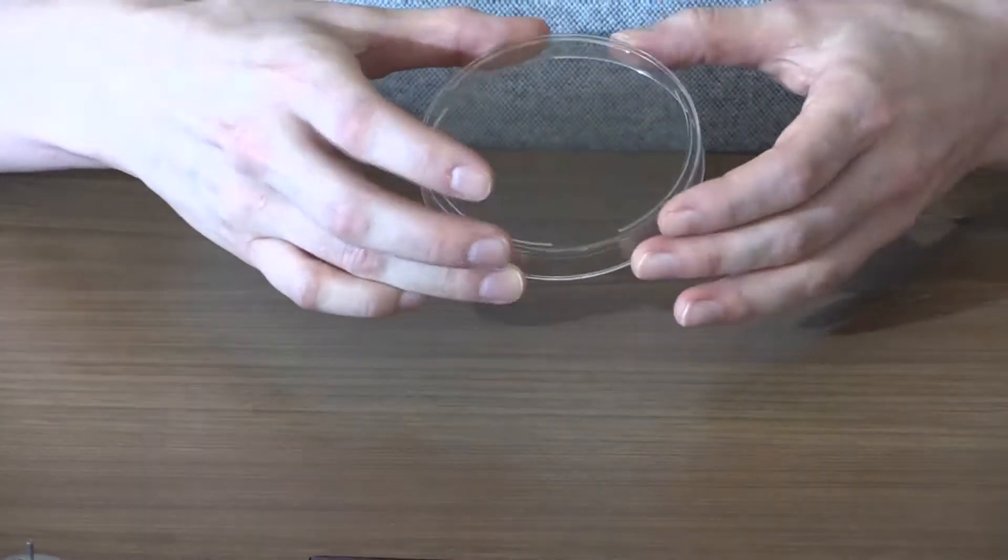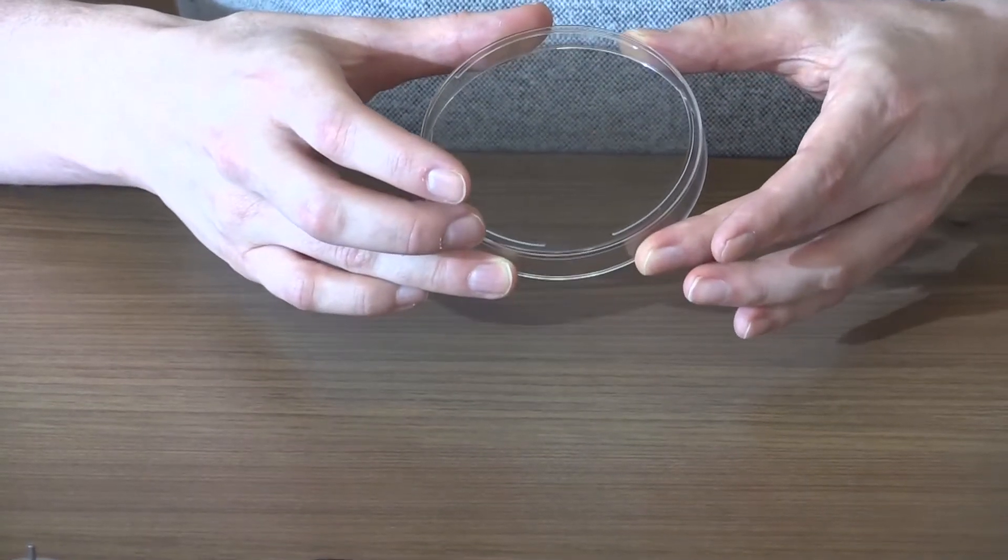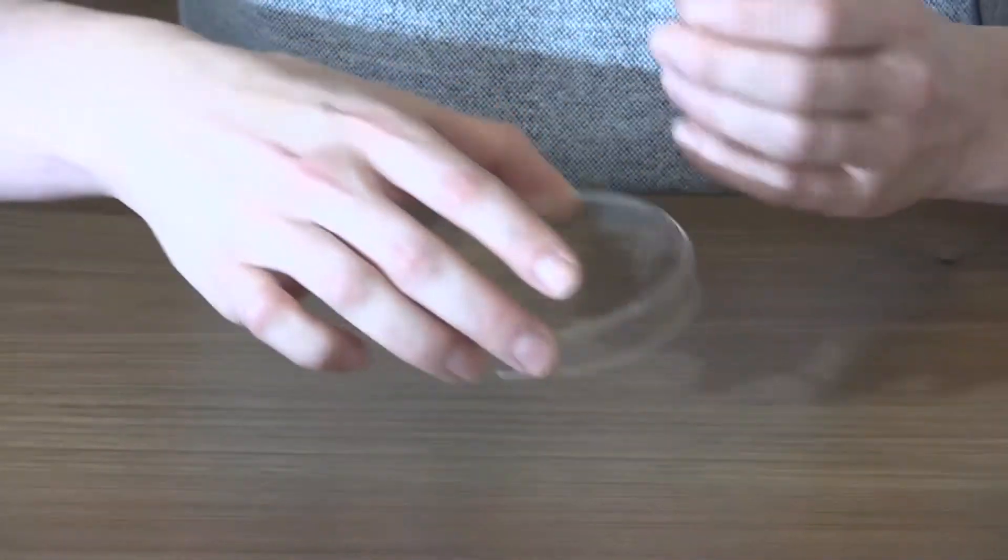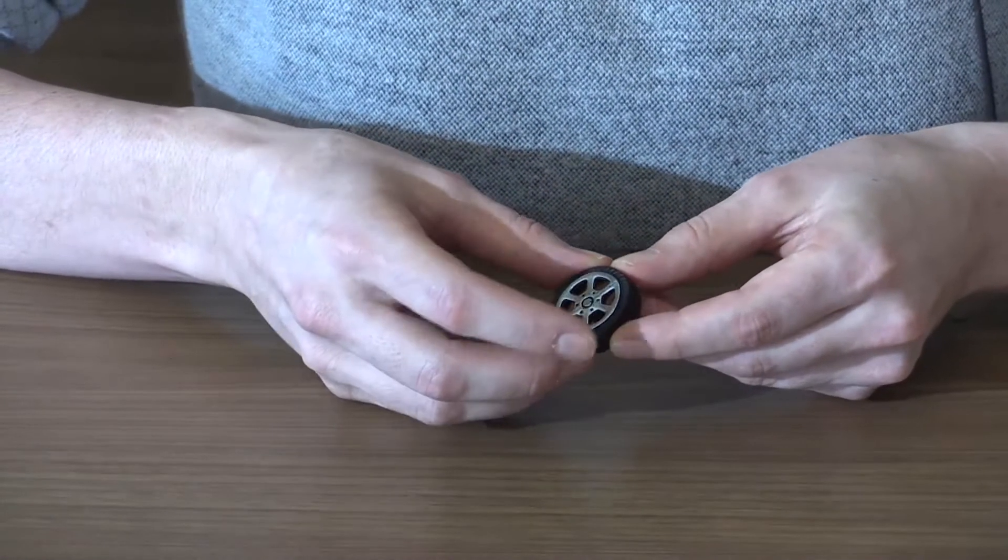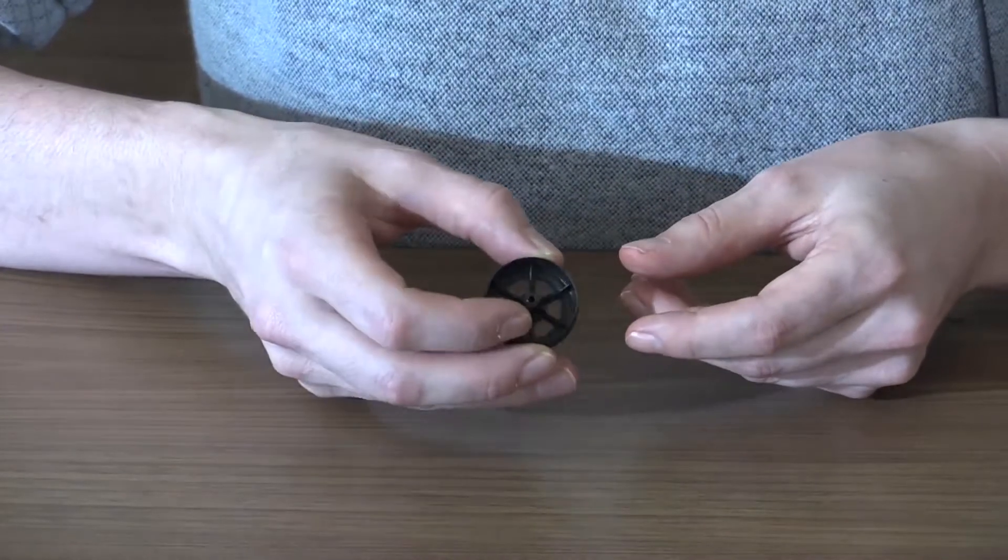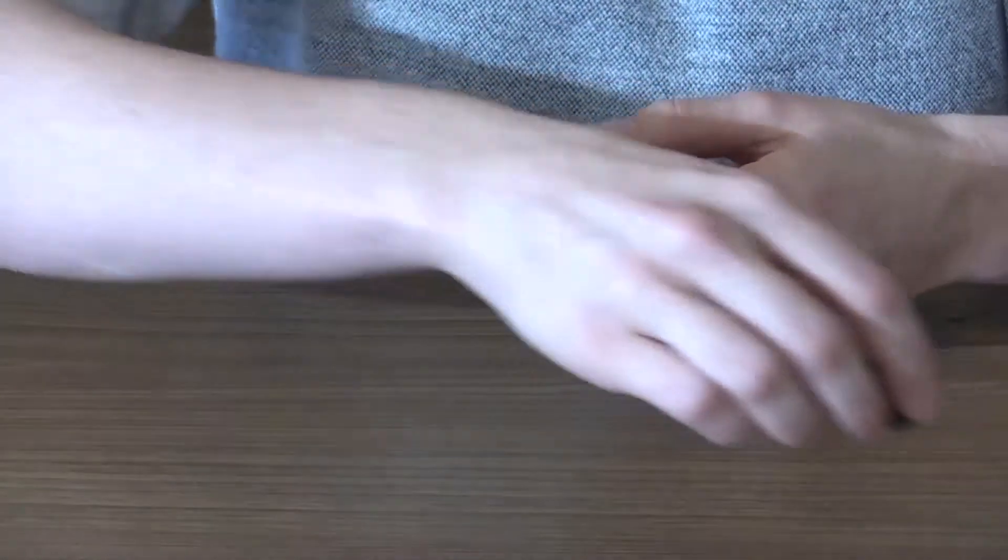We'll have the bottom of a petri dish in order to protect our solar spinner and keep everything together. And then we're also going to use this small toy wheel as a base for our solar spinner so that it has something that it can spin on.